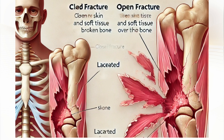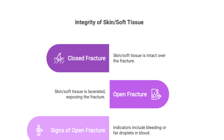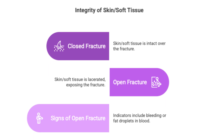There are specific things that might point towards an open fracture, like continuous bleeding from a puncture near the fracture site, or fat droplets in the blood. Those are definitely not good signs. So we know what bone and whether the skin is broken.